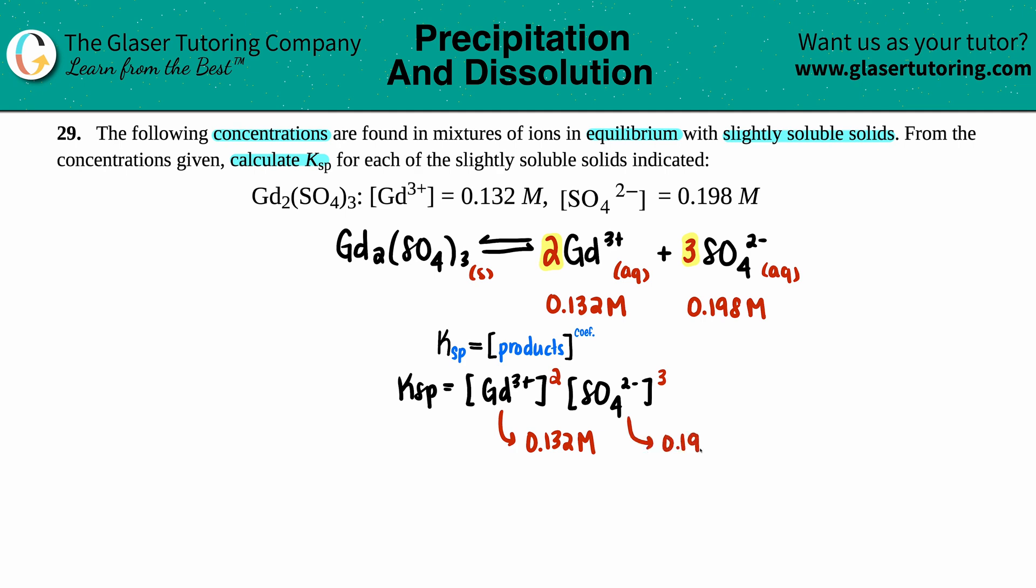Ksp equals, let's see what we got here, 0.132, that's raised to the second, and then 0.198, that is raised to the third. Plug this all into the calculator in one shot. If you feel more comfortable doing it in parts, that's fine with me. Let's just see if our answers match.